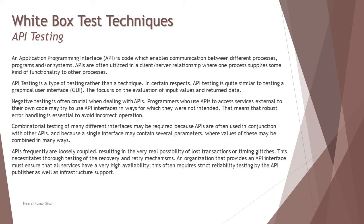API stands for Application Programming Interface, and it is generally the middleware between the frontend and the backend of the application. It acts like an interface between the frontend and backend. It also does a lot of validation when it comes to user queries or user interaction with the application, and not all requests are sent to the server or backend. Web services play a very vital role in managing interactions and sending load or requests per second to the server.